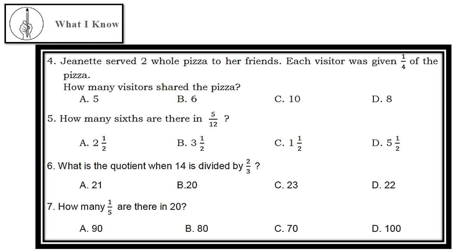Number 7: How many 1/5 are there in 20? A. 90, B. 80, C. 70, D. 100.